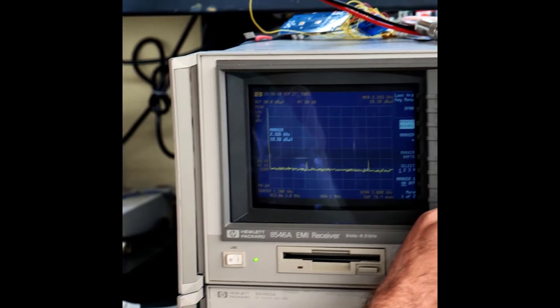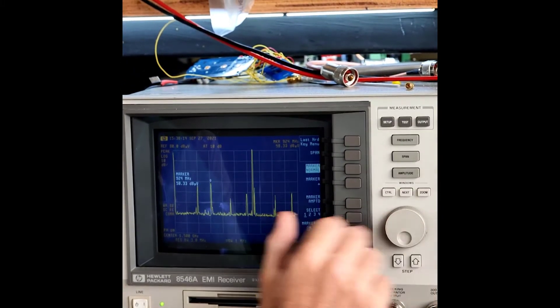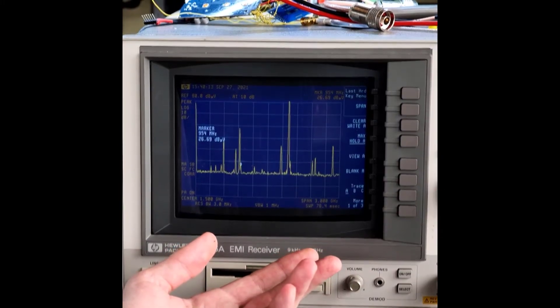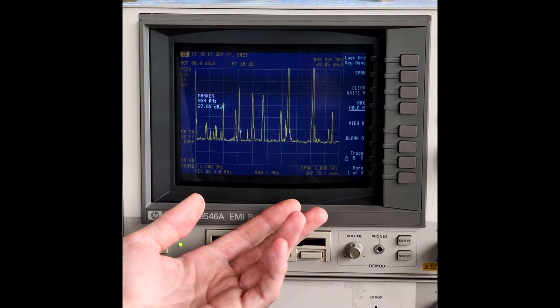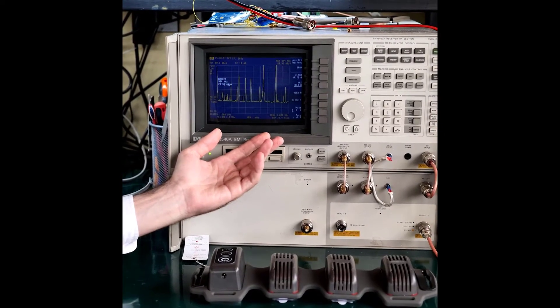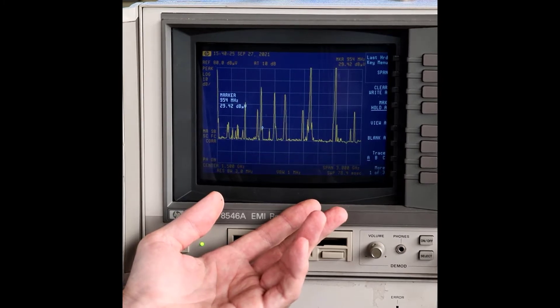We also will get some cellular peaks over here, probably around 800 or so. You can see now it's transmitting. Currently you can see the accumulated emissions of this cell phone. I use the peak hold function to see where it transmits, at which frequencies, and how powerful are those transmissions. The cell phone gives a lot of EMF emissions.